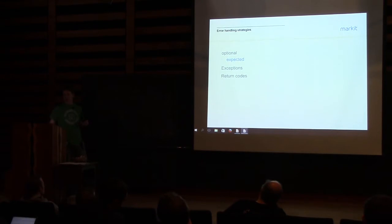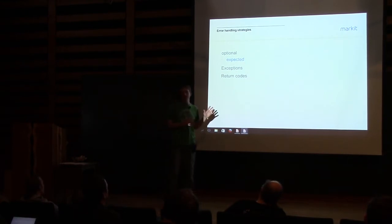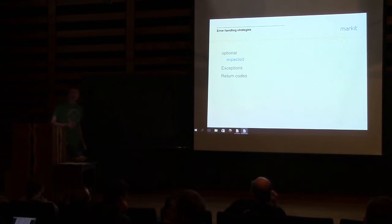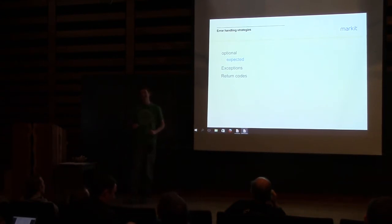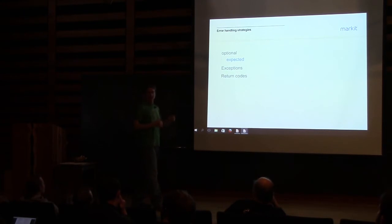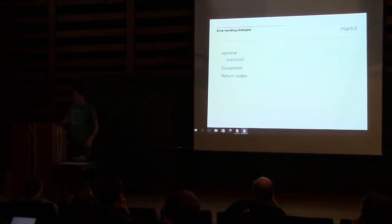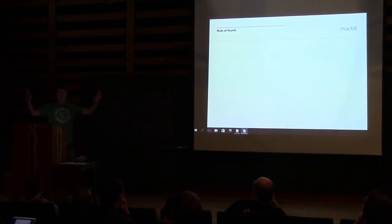Exceptions, optional/expected, and return codes represent the three primary error handling strategies. Another option is calling std::terminate. An audience member joked that the most common strategy is to ignore the error completely — and while that's how people do write code, it's not how they should. If you don't have to worry about correctness, you can make code as fast as you want. The fastest program is int main() {} — probably bug free.